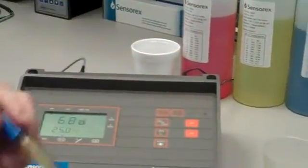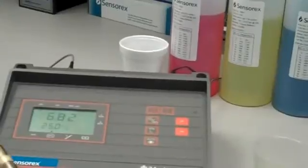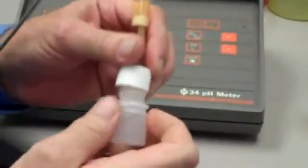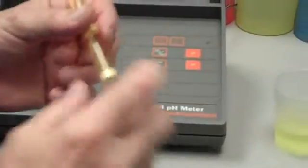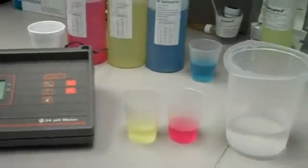I'll turn on the meter, and I'll remove the soaker bottle that's provided by the manufacturer of the electrode. The soaker bottle keeps the electrode moist and ready to go out of the box.